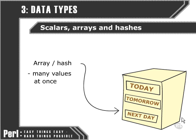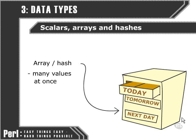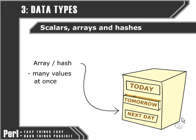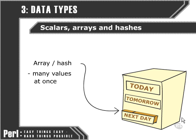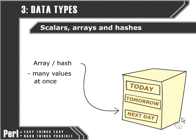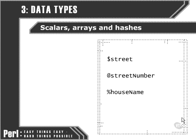However, with an array, we can have many values at once. For instance, we can have a more generic array or a hash that can contain values for today, tomorrow, and the next day. So we might have Wednesday for today, Thursday for tomorrow, and so on. The difference between an array and a hash can be summed up like this.